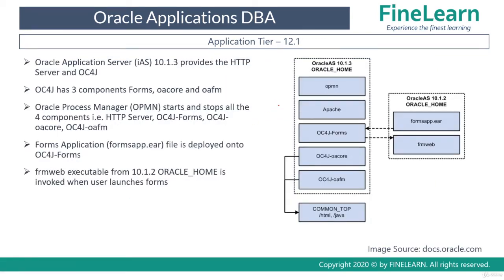Now let's look at the architecture of release 12.1. Release 12.2 is the latest version available, and customers implemented in the last five to seven years would have used EBS 12.2. However, if a customer is still using 12.1, you will need to understand how the 12.1 architecture works.